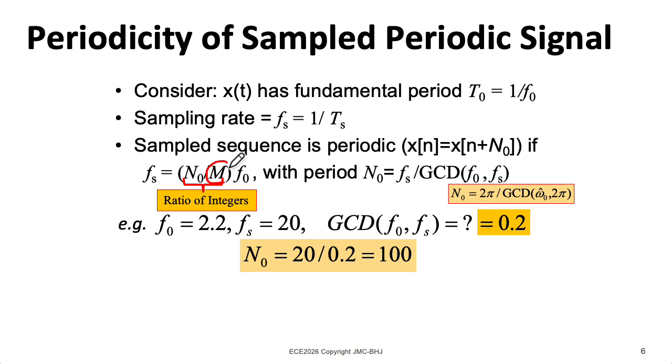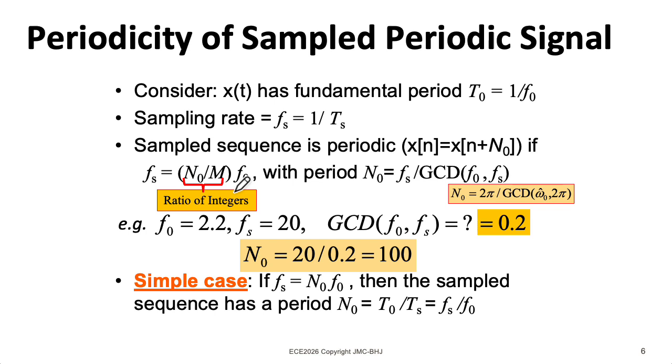Now the simplest case is if m, the denominator here, is equal to 1. And you just sample at an integer multiple of the frequency of the signal. And then that integer is just the period of the sampled sequence N₀.